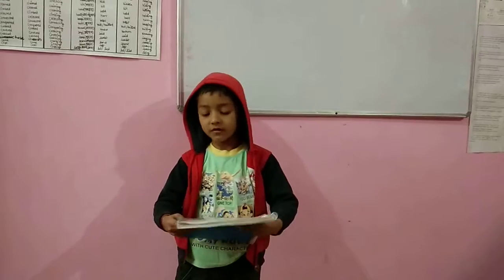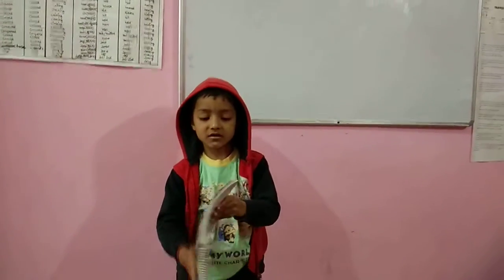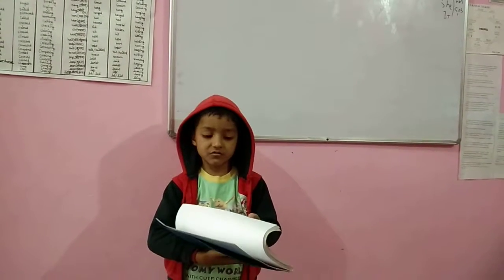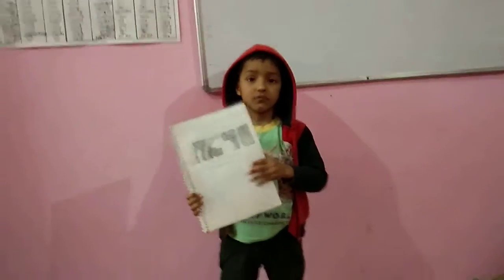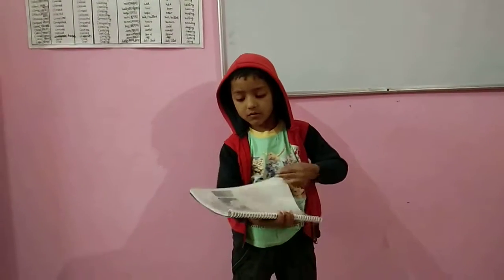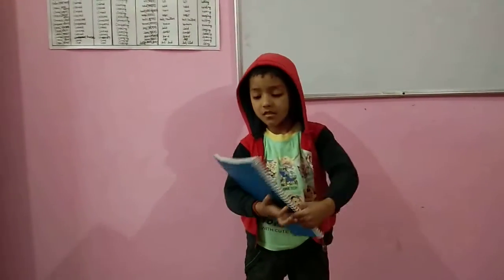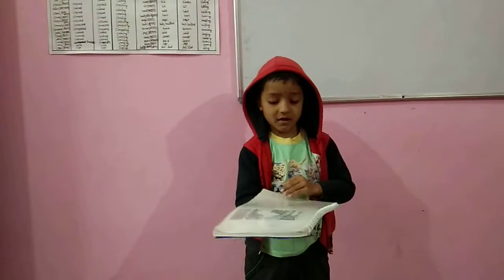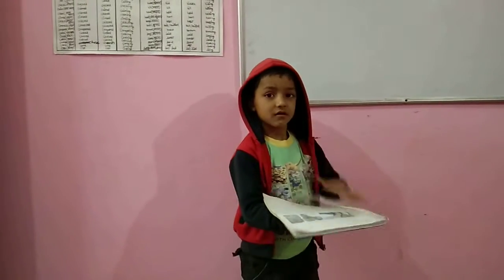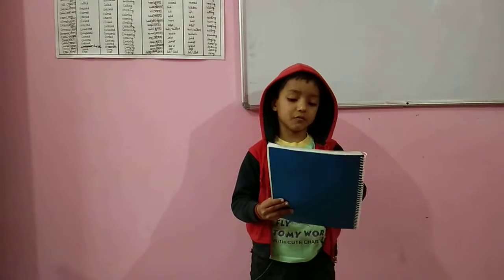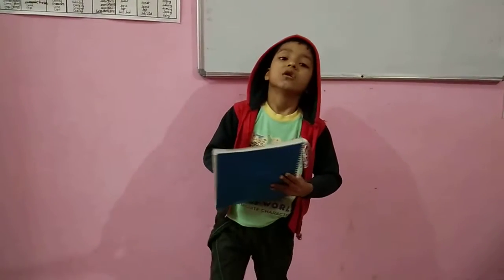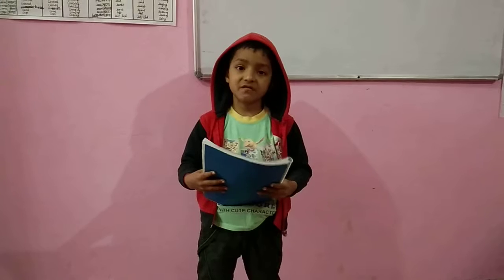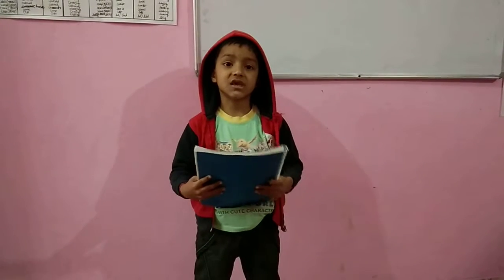My book has hundred papers. My book has blue-white color. My paper has using a pen. My book has signs. My book has big-big pictures. My book has writing a pencil, leaf pencil. Write.